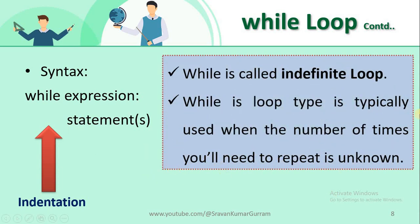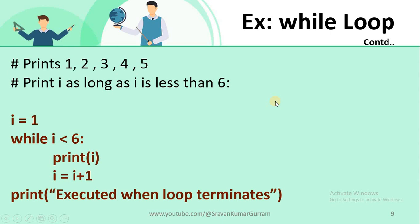The while loop is also called an indefinite loop because it is generally used whenever we don't know how many iterations will be executed. That's why it is also called an indefinite loop. Generally, for loop is used to iterate over a sequence, where we know how many iterations will be executed.